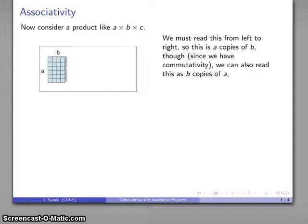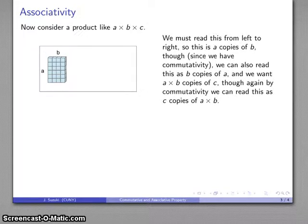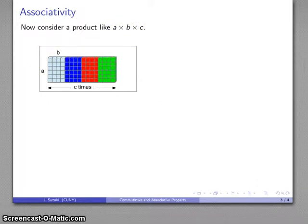And then what I'm going to do, I want this many copies of C. And again, by commutativity, this many copies of C is the same as C copies of this thing. So here's my A times B, B times A. I'm going to take C copies of it. And this is a figure that represents my product, A times B times C.